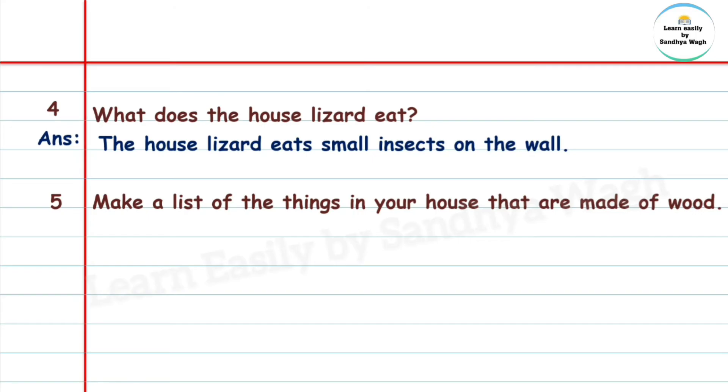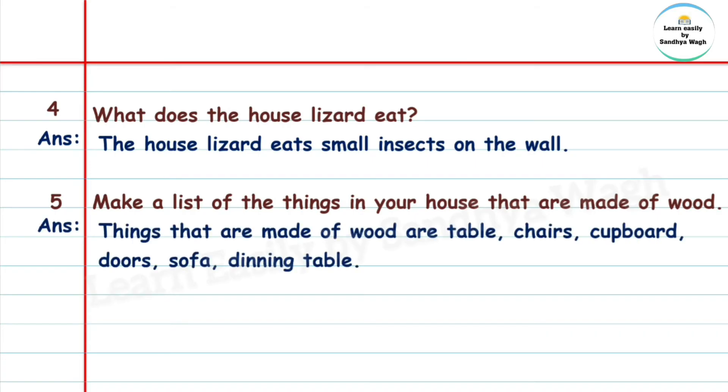Question 5: Make a list of the things in your house that are made of wood. Answer: Things that are made of wood are table, chairs, cupboard, doors, sofa, dining table, etc.